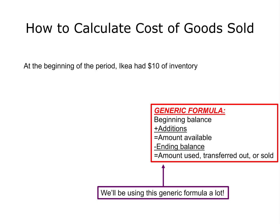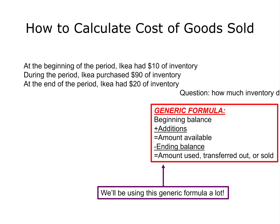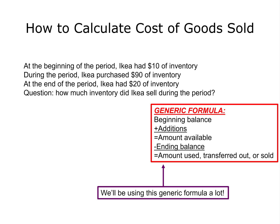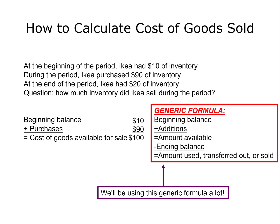At the beginning of the period, IKEA had inventory of $10. During the period, IKEA purchased $90 of inventory. And at the end of the period, IKEA only had $20 of inventory. We start with the beginning balance of $10, then add the purchases of $90. We'd more specifically call the total the cost of goods available for sale — $10 of beginning inventory plus $90 purchased gives us $100 of goods available for sale.